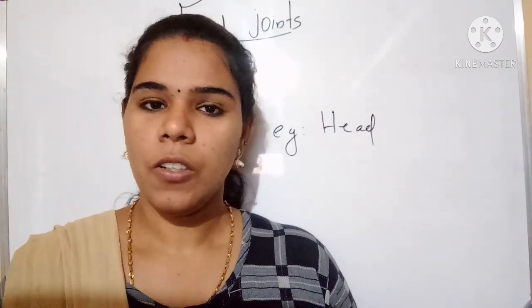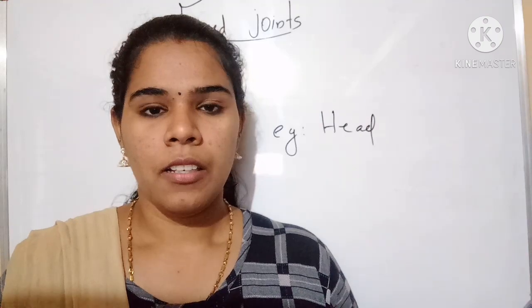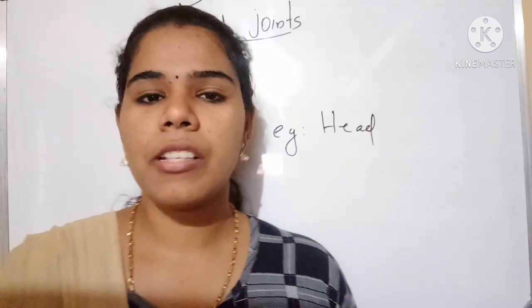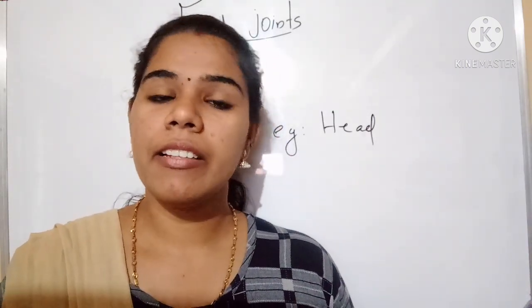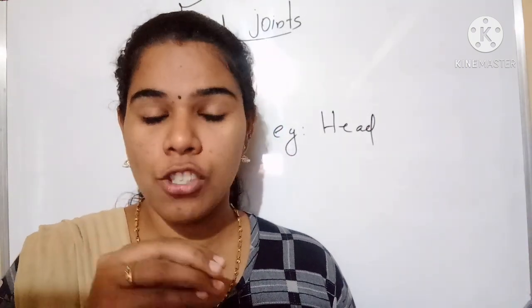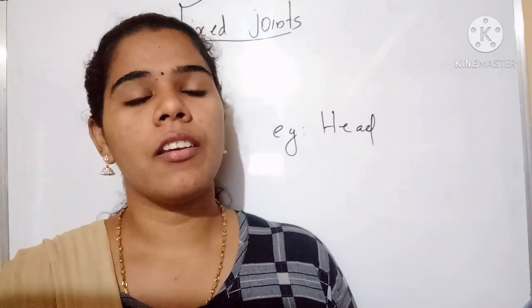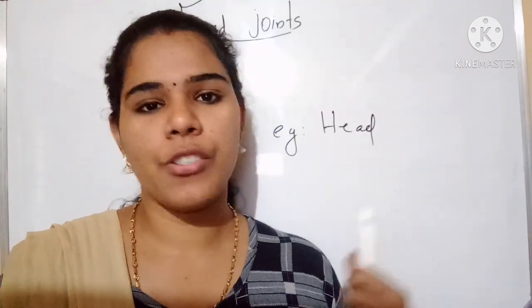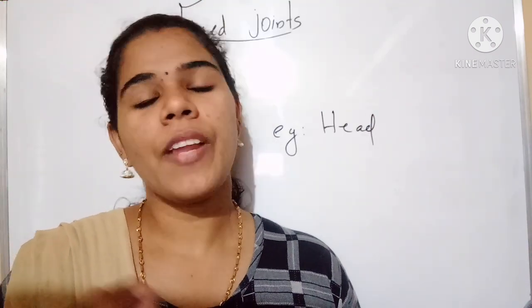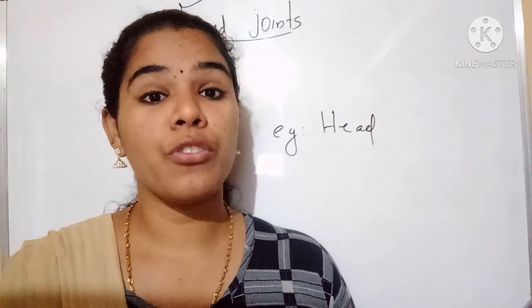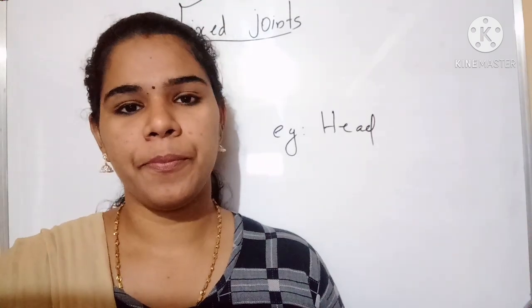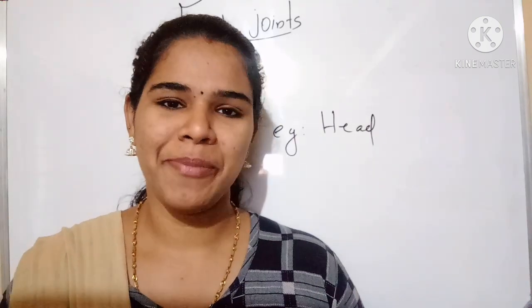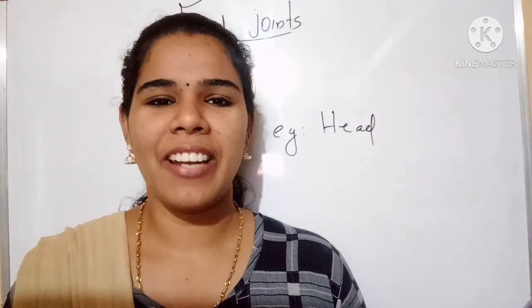So today we discussed about another type of joint called fixed joint. Please study the remaining joints: ball and socket joint, hinge joint, pivot joint, and fixed joint. Next class we will discuss about the new topic: skeletal system. Please study this fixed joint — it's a very simple and small topic. Thank you, have a nice day.